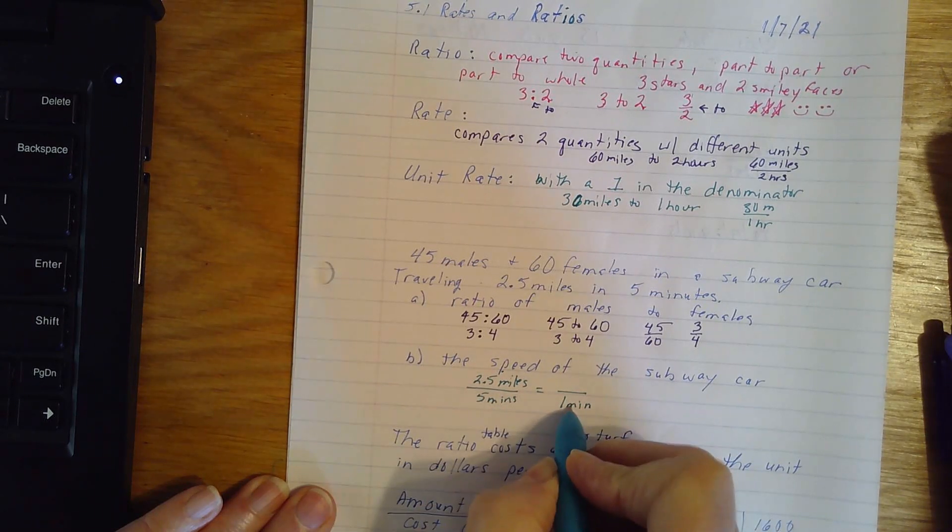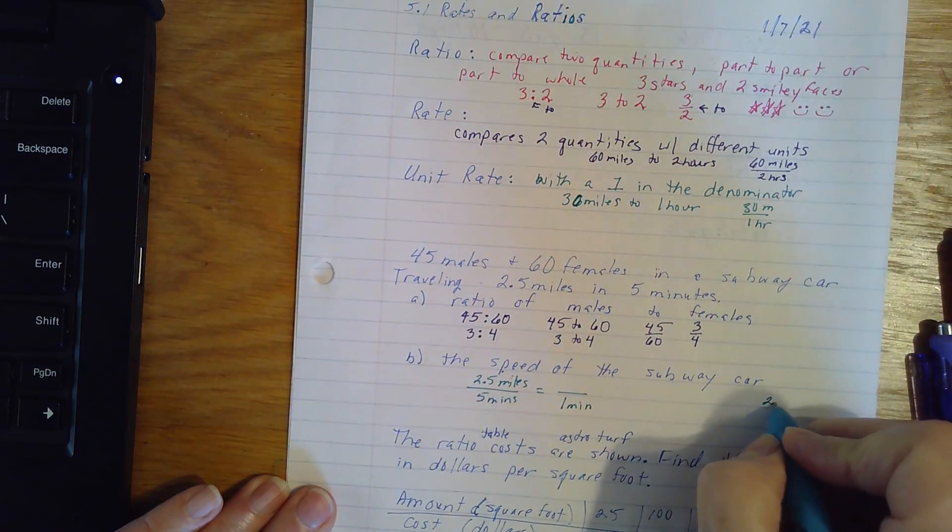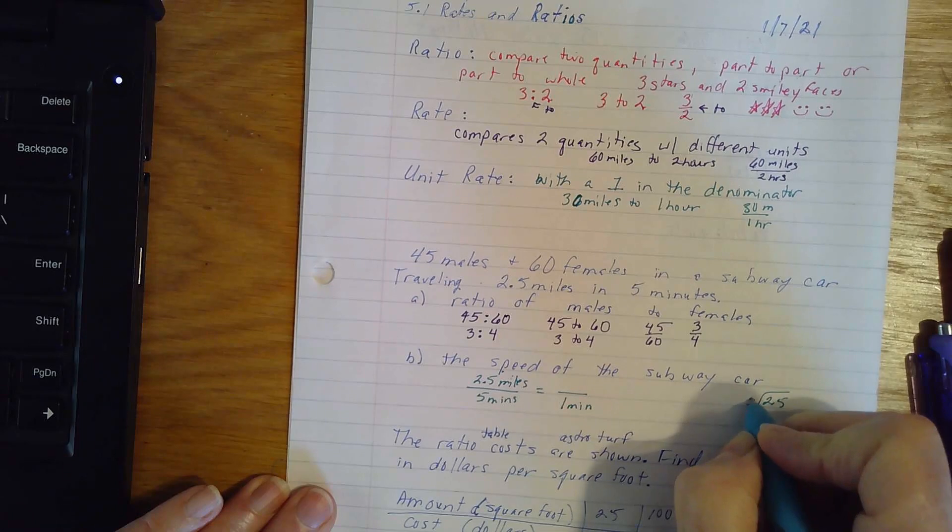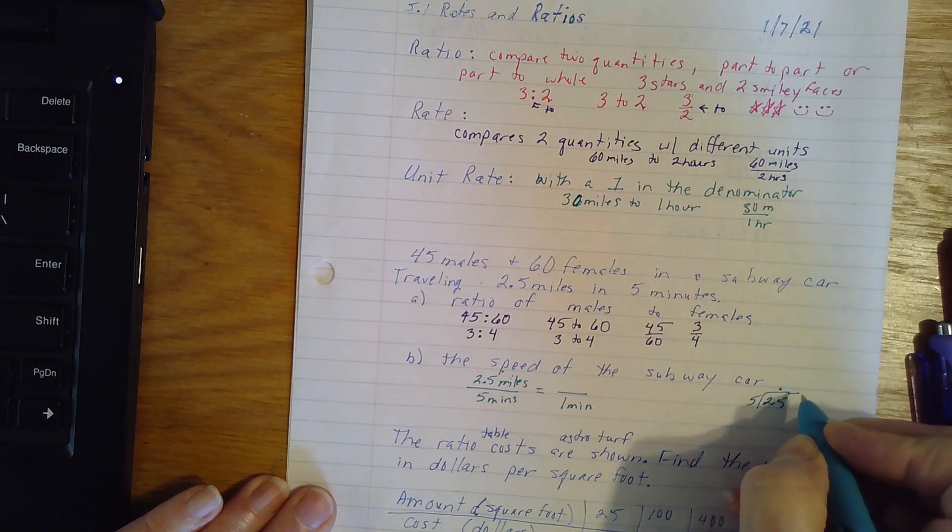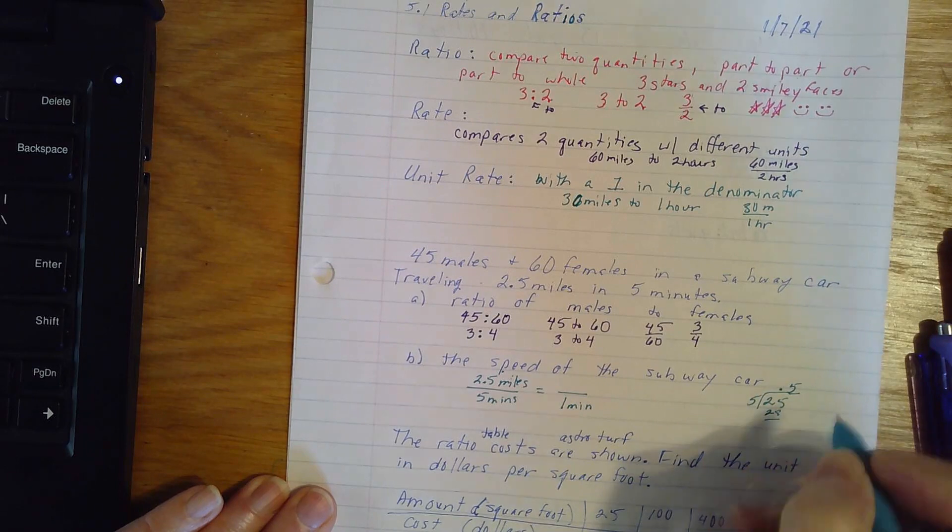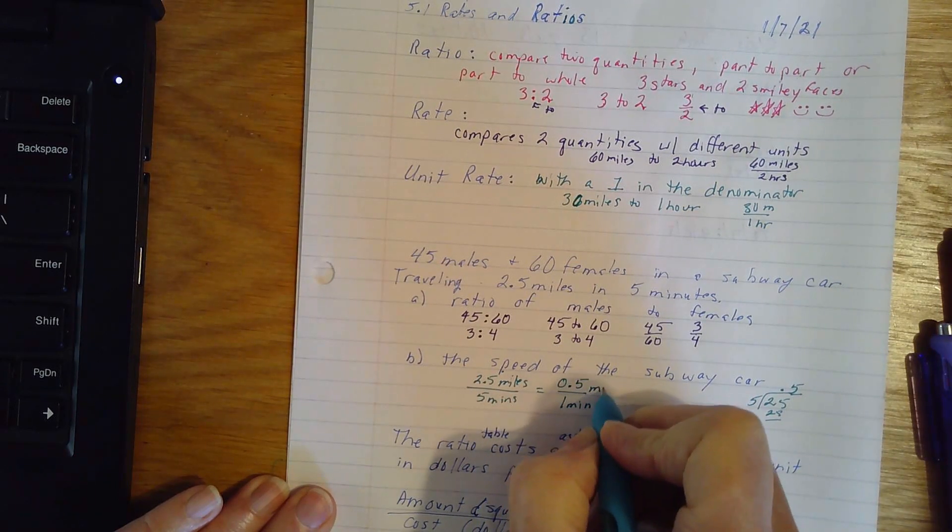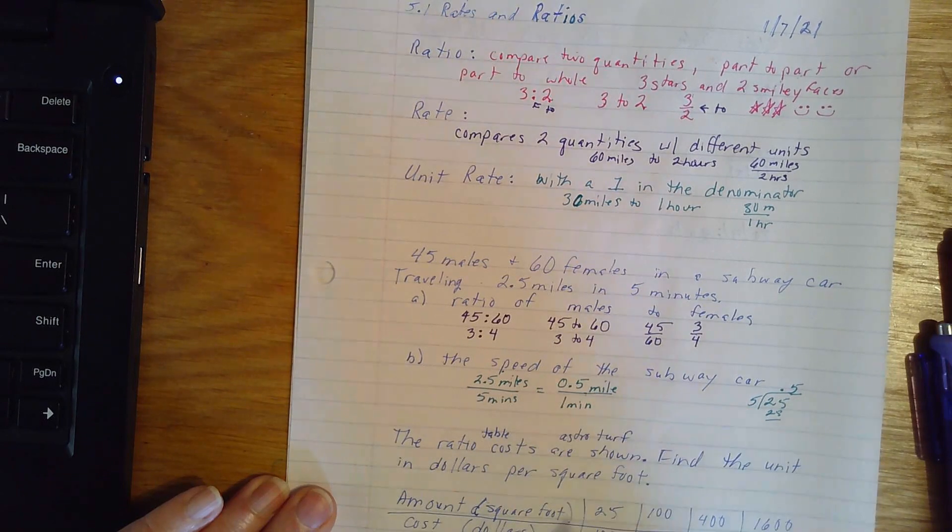Dividing by 5. And then 2 and a half dividing by 5. Let's do a little bit of margin math. 2.5 divided by 5. Move my decimal up. 5 times 5 is 25.